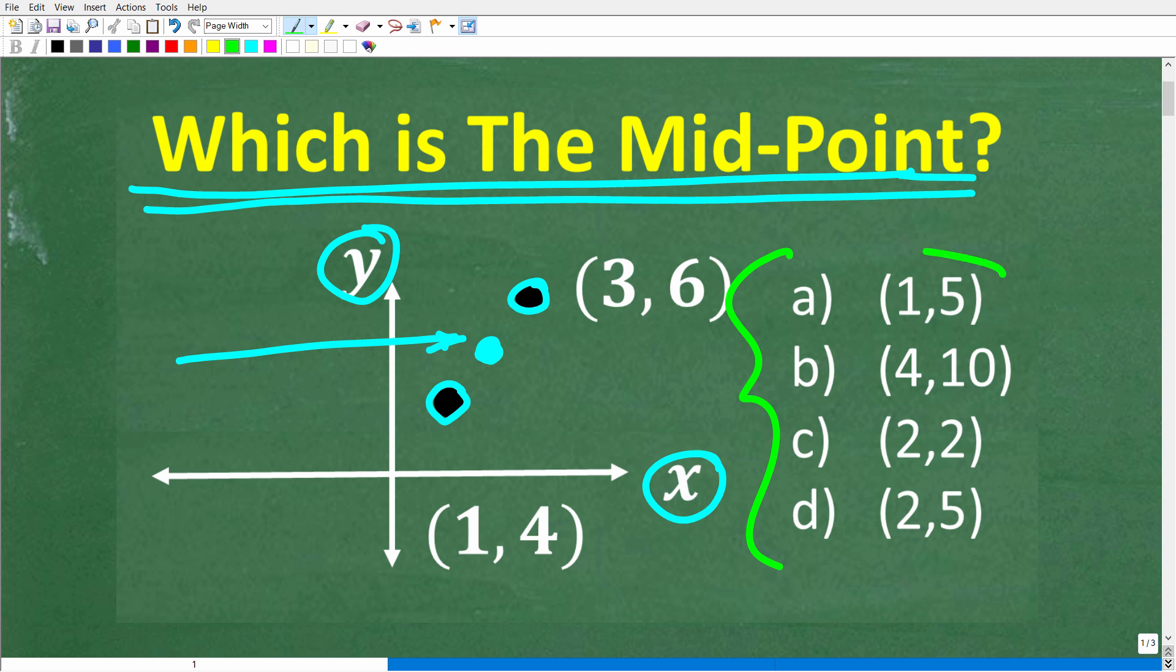So A is 1, 5, B is 4, 10, C is 2, 2, and D is 2, 5.